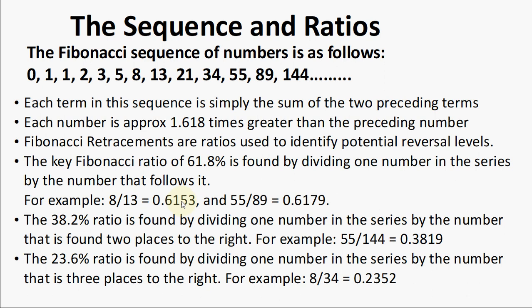For the 38.2 ratio, we find that by dividing one number in the series by the number that is found two places to the right. So to get 38.2, we divide a number by the number two places to the right. So 3 divided by 8 gives you 0.382. 55 divided by 144 gives you that. 2 divided by 5, 8 divided by 21, will give you 0.382.